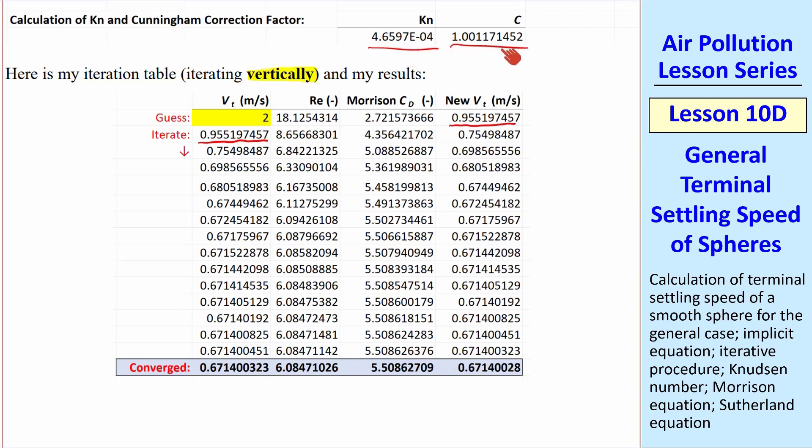you'd have to use a different equation for viscosity and for the mean free path λ. Thus, you would get different Knudsen and Cunningham correction factor values. But Reynolds number, Morrison's Cd equation, and our equation for vt would remain the same regardless of which fluid you're using.